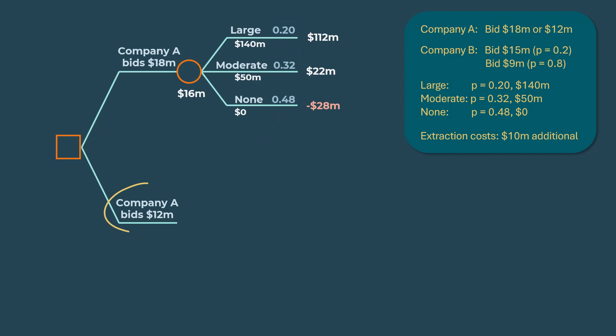If Company A bids $12 million, we know that Company B can bid $15 million with 0.2 probability and $9 million with 0.8 probability. This node is represented with a circle because the branches have probabilities associated with them. If Company B bids $15 million, Company A will be bidding lower than Company B at $12 million. Hence, Company B will win the bid and consequently, the net return for Company A will be 0.